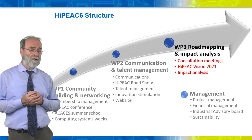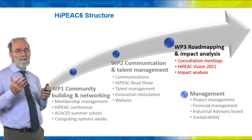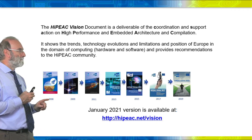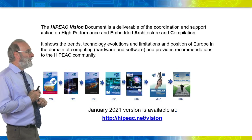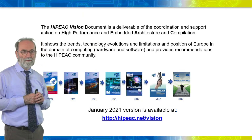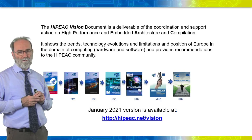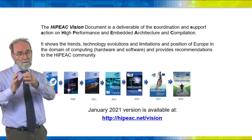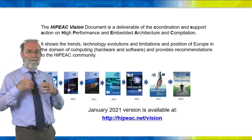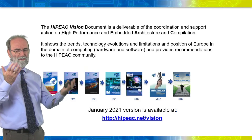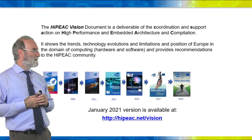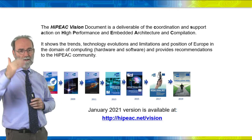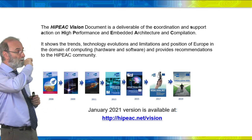This brings me to the third work package: roadmapping and impact analysis. We produce a document called the HiPeak Vision. We started in 2008 — here you can see the first roadmap cover — and in 2009, 2011, all the odd years, we created it as a bi-annual document. Over the years we learned how to improve: in the first year we just asked people about their narrow research area and compiled everything. Then we discovered not all areas are equally important, so from 2009 we started making choices, had an editorial board, and began defining recommendations for the Commission, politicians, et cetera.